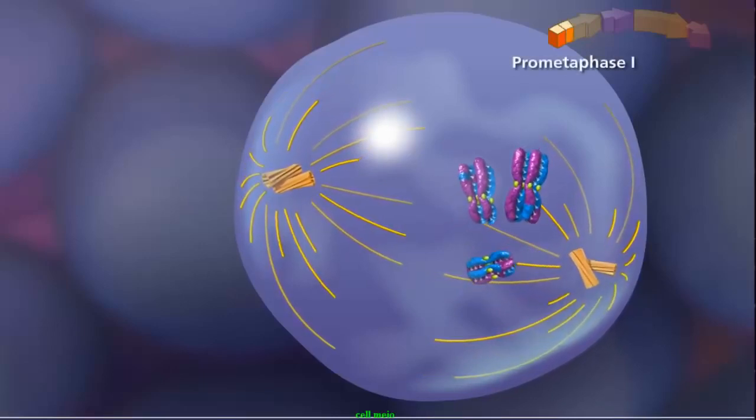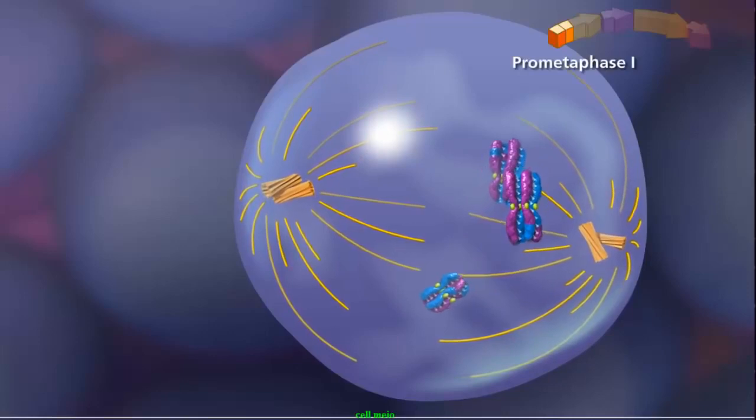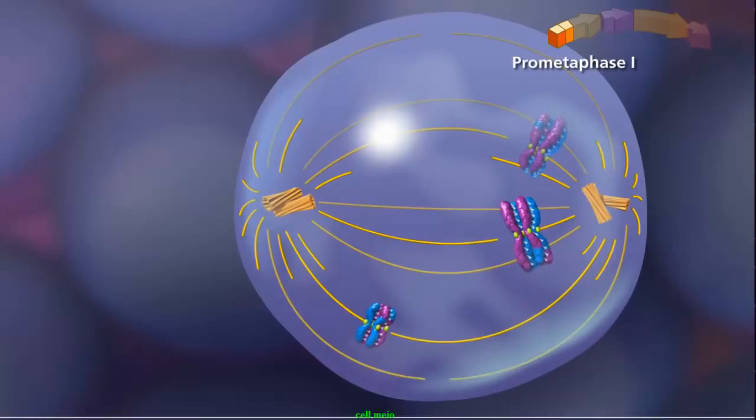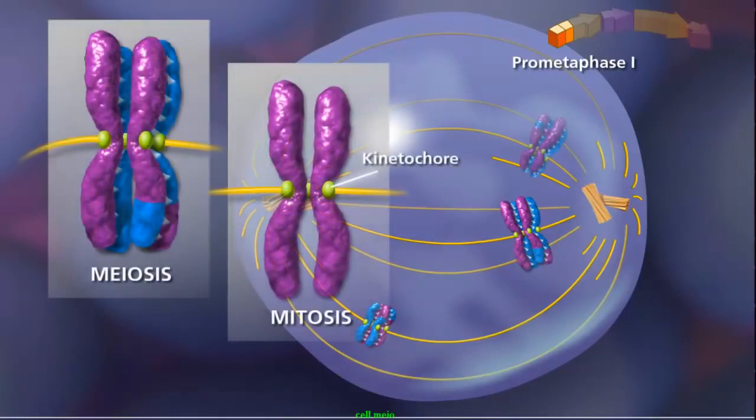In prometaphase I, with the paired centrioles in place, the meiotic spindle is fully formed. The sister chromatids attach to the spindle fibers by their kinetochores. Here, another key difference between mitosis and meiosis occurs.